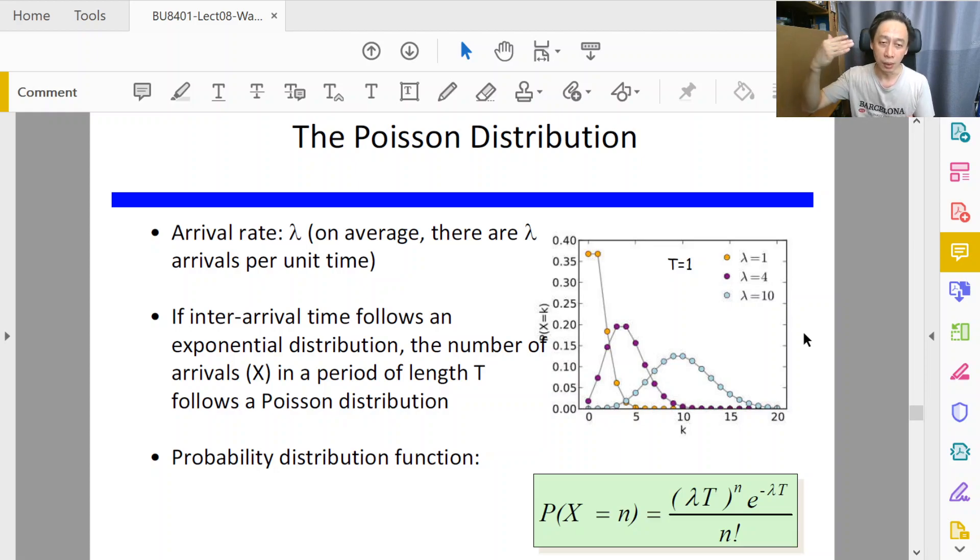So that's about Poisson distribution. Now, just like exponential distribution, it can work outside of the queue system on the inter-arrival times. Inter-arrival times are measured outside of the queue system. Service time is measured inside the queue system, and we can also have service times following exponential.